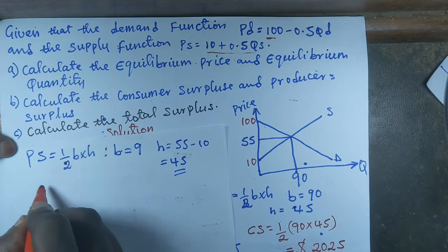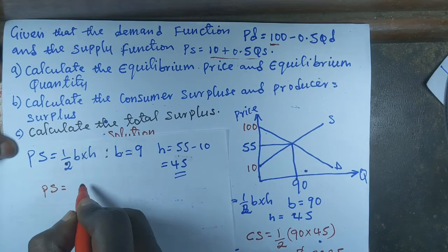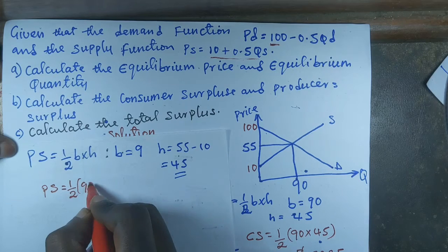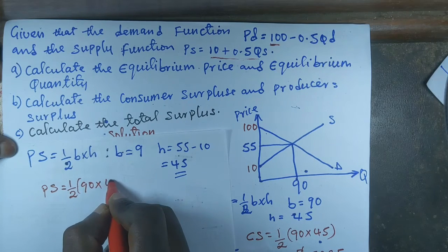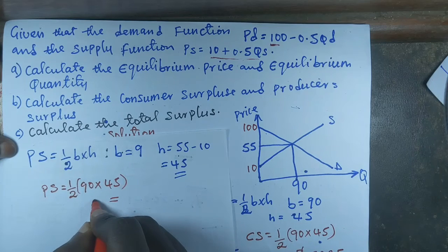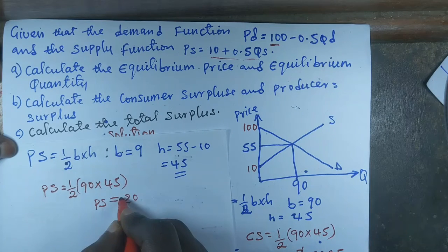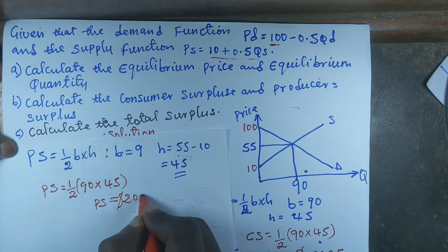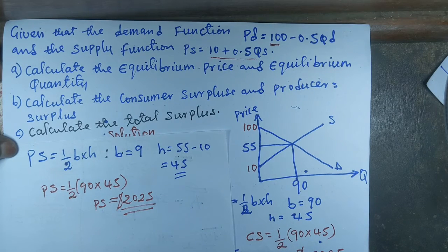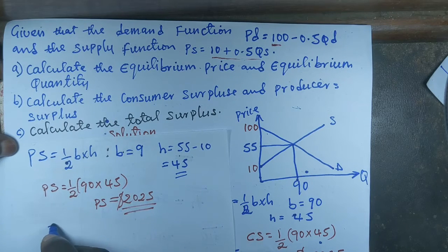So our producer surplus equals one-half times 90 multiplied by 45, which comes out to be 2,025 US dollars. That's our value for producer surplus.